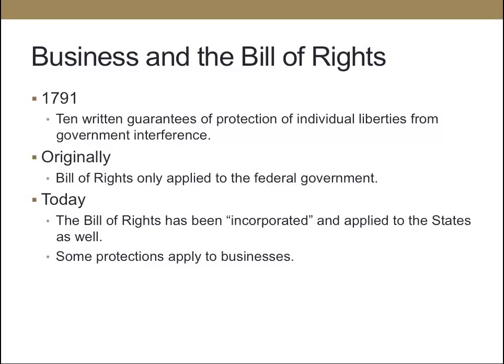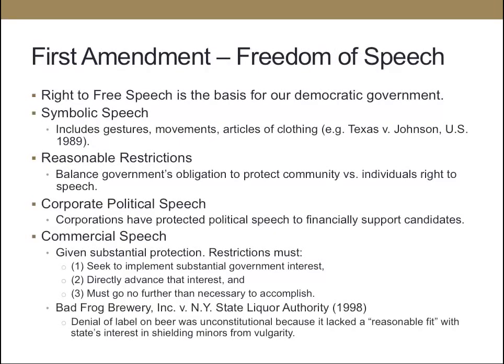Let's look at the Bill of Rights from the aspect of business. Originally, the Bill of Rights only applied to the federal government — it was ten written guarantees of protection of individual liberties from government interference. Today the Bill of Rights applies to the states, and some of those protections apply to businesses. As we go through them, we'll focus on how they relate to business.